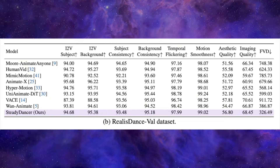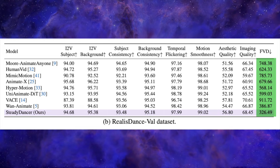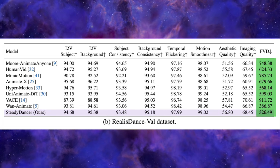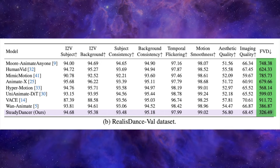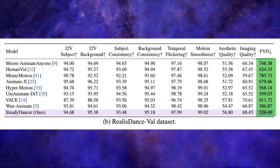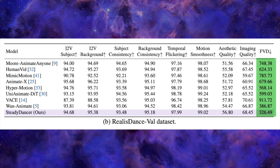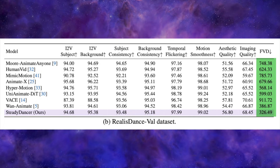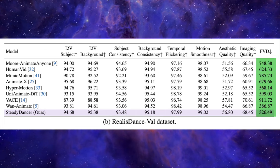On benchmarks like Release Dance Val, it hits the best FVD score in the whole table while staying very competitive or better on subject consistency, background consistency, flicker, and overall visual quality compared to models like Juan Animate, Mimic Motion, Hyper Motion, and UniAnimate DIT — which is a big deal because FVD is the metric people actually care about for whether this looks like real video.